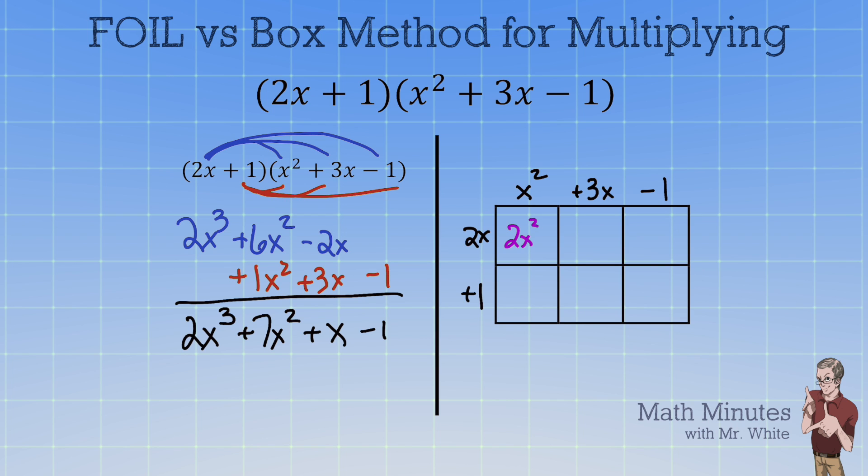So 2x³. We've got 6x². We've got -2x there. And then 1 times x² is x². We have 3x times 1 is 3x. We have -1 there.